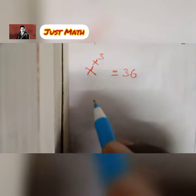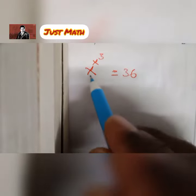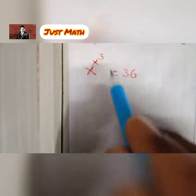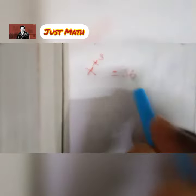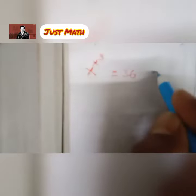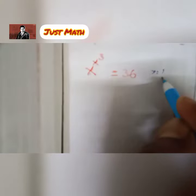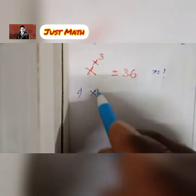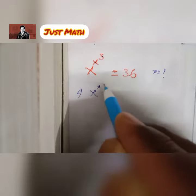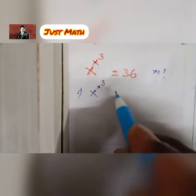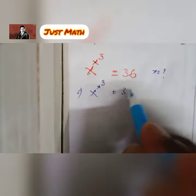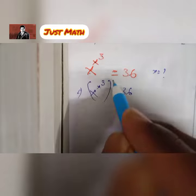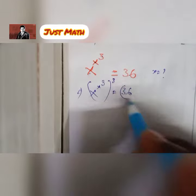Hello everybody. The question is: x to the power x to the power 3 equals 36 — what is the value of x? x to the power x to the power 3 equals 36. I make both sides cube.